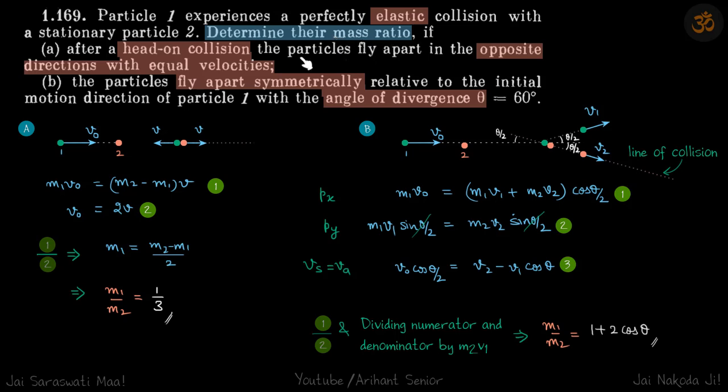Let's consider the first case. We'll write the conservation of momentum equation: m1·v_naught = (m2 - m1)·v. Velocity of approach v_naught equals velocity of separation 2v. If we divide these two equations, we get the mass ratio which is 1/3.